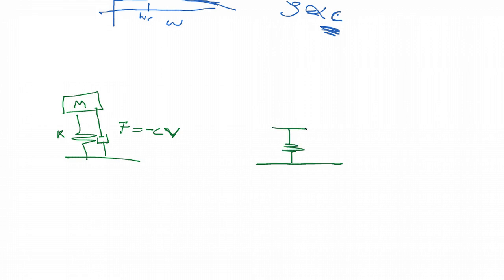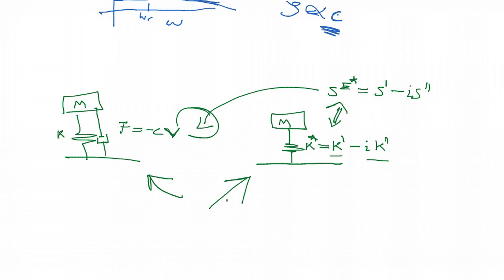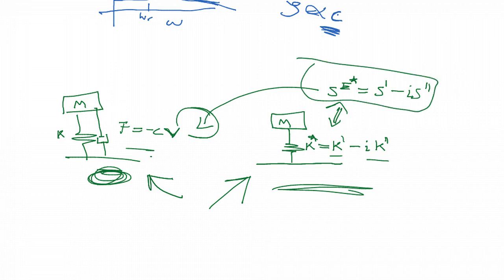The second case has a spring constant k, but the spring constant also has an imaginary term and a real term — k-prime and k-double-prime. This is similar to the earlier discussion about piezoelectric materials, where the elastic compliance is a complex term with both a real part and an imaginary part. These two representations are comparable. I'm going to show you the difference between these two cases and why we use imaginary numbers instead of just viscous damping.